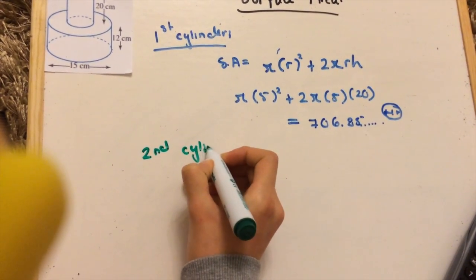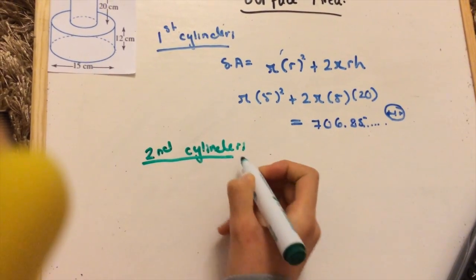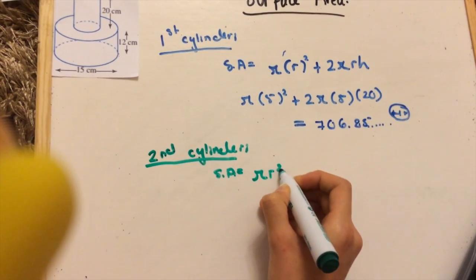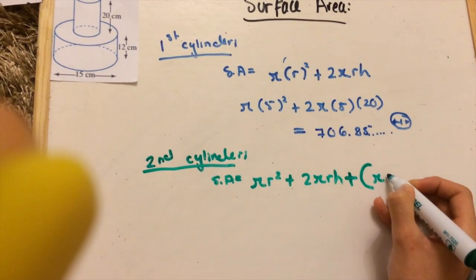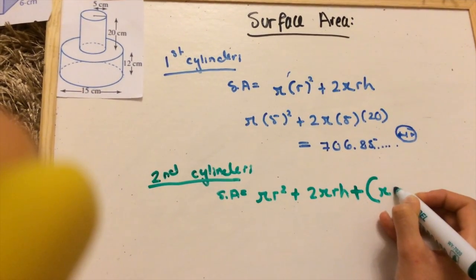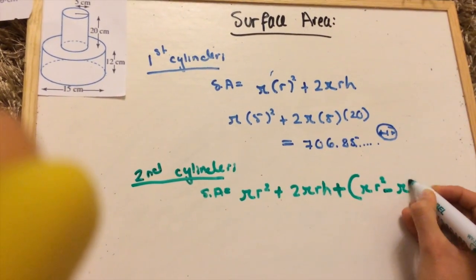So I'll use a different color here. Our same formula, πr² + 2πrh. And then we're going to add the top circle. We're going to subtract the little circle from it to get the area around.